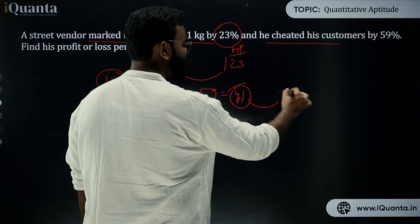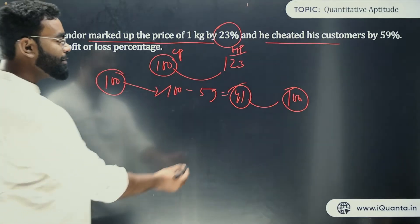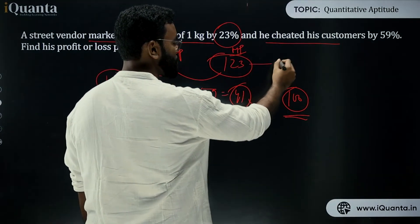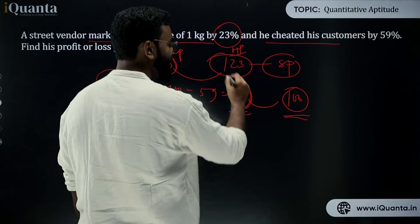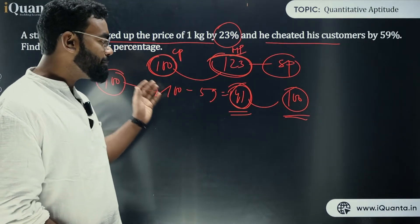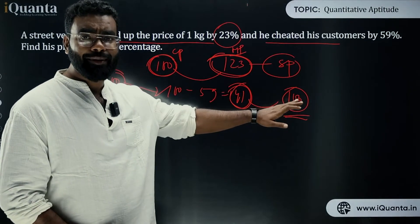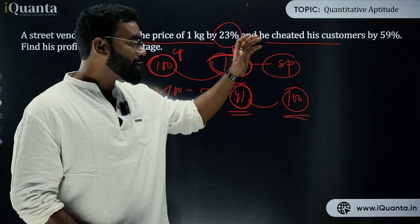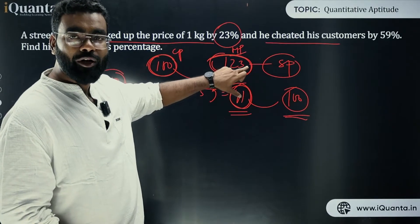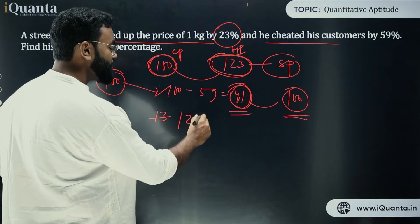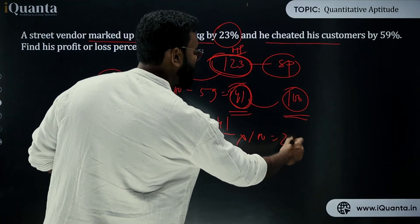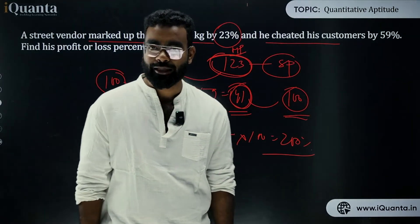The seller claims to sell 100 but the customer gets 41. The mark price (and selling price) of 100 is 123. So 41 is being sold at 123. The profit is 123 − 41 = 82. The profit percentage is 82 / 41 × 100 = 200%. This is the basic way to solve this type of question.